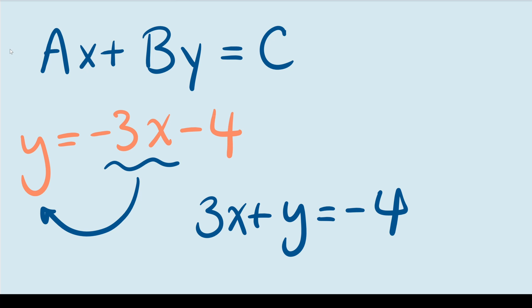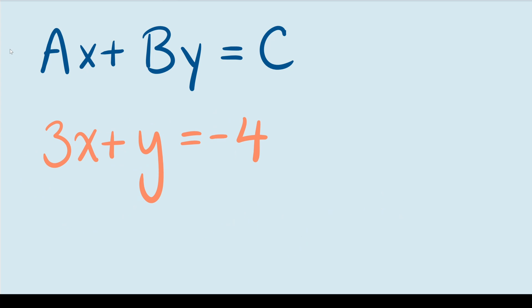Now that we have the standard form of the linear equation, we can find its intercepts. Let's find the x intercept first. All I have to do is plug in zero for the value of y. Doing that gets rid of this whole term. And that leaves me with 3x equals negative 4. Now if I want to solve for x, all I have to do is divide by 3 on both sides and that gives me x equals negative 4 thirds. That's the x intercept.